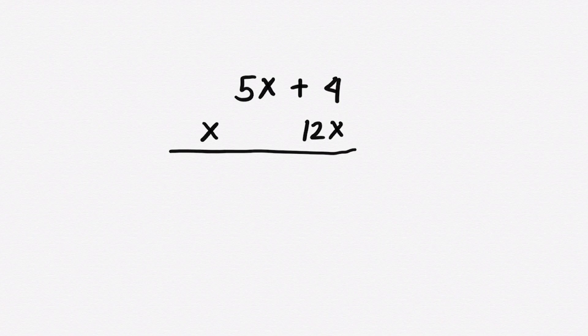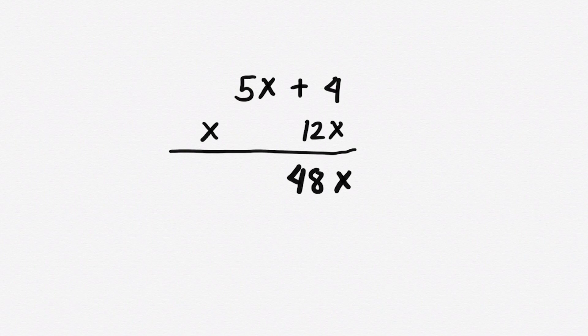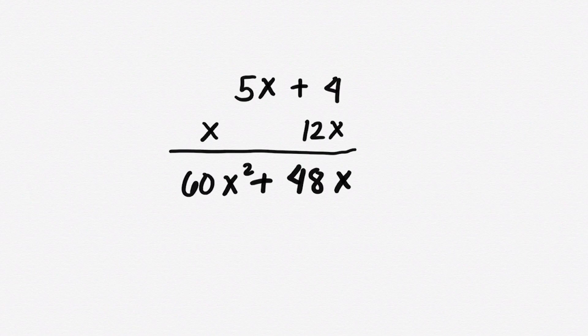Do you know that we can arrive at the same answer by multiplying the polynomials vertically? 4 times 12x equals 48x. 5x times 12x equals 60x squared. The final product is 60x squared plus 48x, which is the same product from earlier.